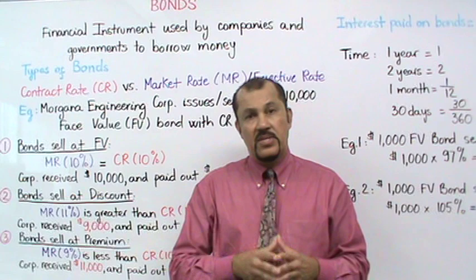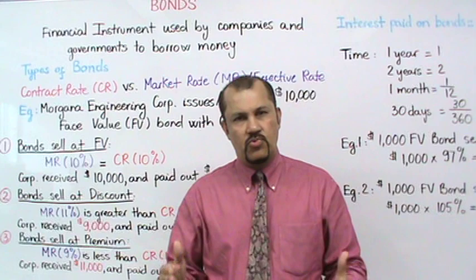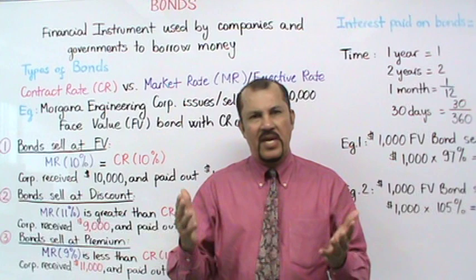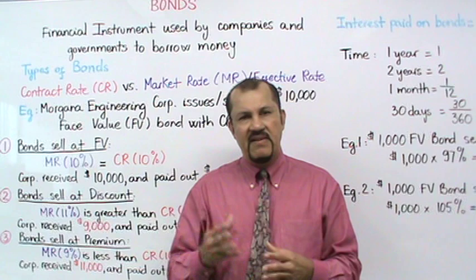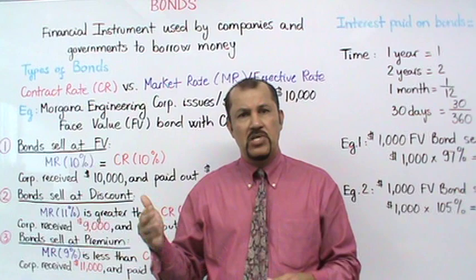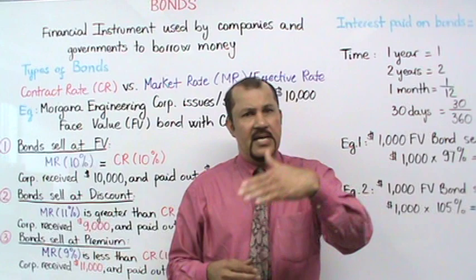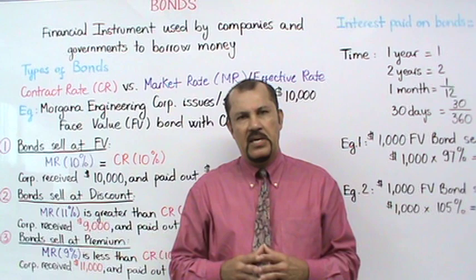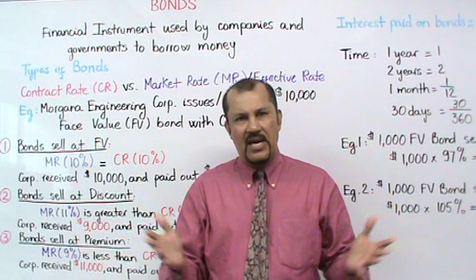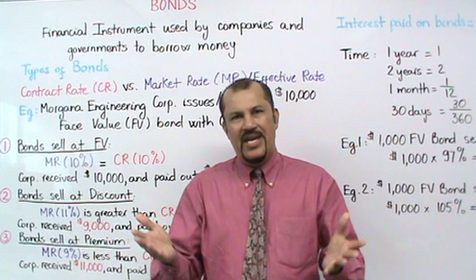Now, in addition to the contract rate, there's another interest rate you have to be familiar with called the market rate. One simple way to understand it: if an investor is looking to invest $10,000, he can buy a Morgana Engineering bond for $10,000 that pays 10%, or he can shop around for other investments. If he were to average out all his other investment options, that average interest rate could broadly be categorized as the market rate.